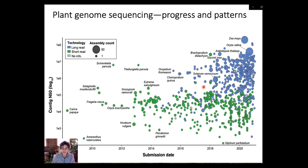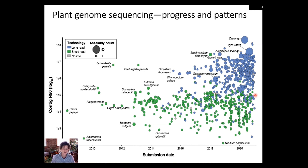A few things jump out from this graph. Each dot represents a species with a genome assembly, plotted over time against contig N50, which represents how contiguously the genome is assembled. One thing that jumps out right away is that the pace of plant genome sequencing has really accelerated in the past five years — we're sequencing, assembling, and publishing far more genomes today. In fact, nearly three quarters of available genome assemblies were produced in the last five years, and they're also producing higher quality genomes, with substantially improved contig N50 values.